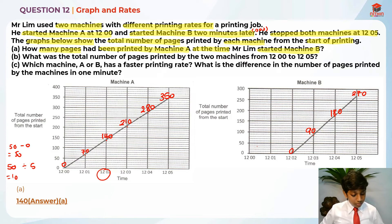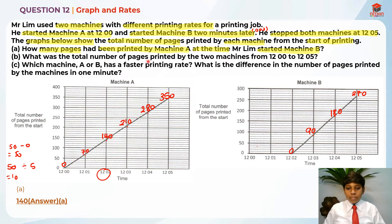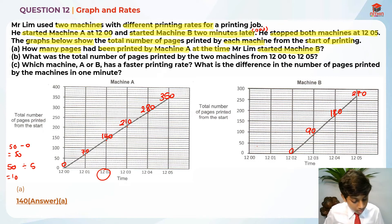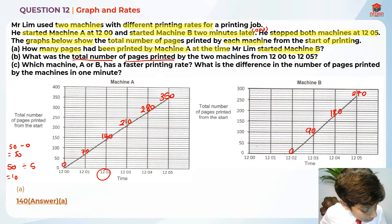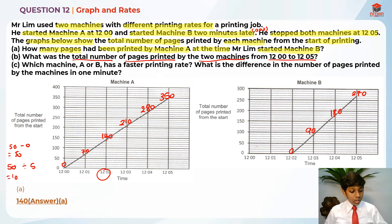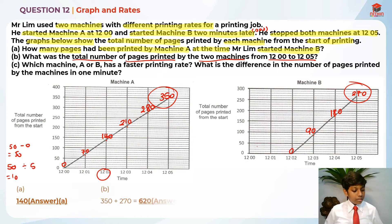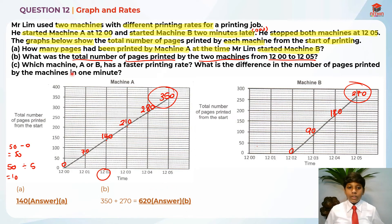Now let's move on to Part B. What was the total number of pages printed by the two machines from 12:00 to 12:05? Just like Part A, we look at the top points of each graph. We add 350 plus 270, which gives us 620 as the answer for Part B.